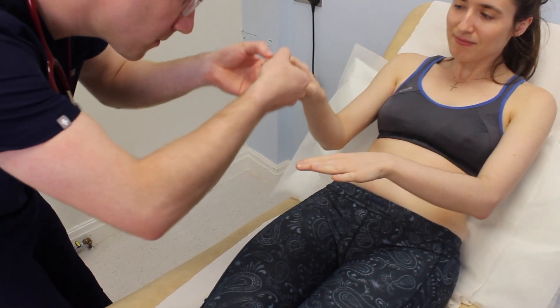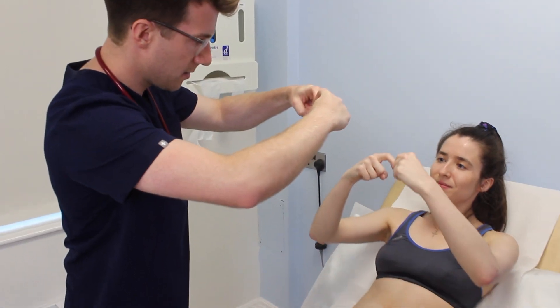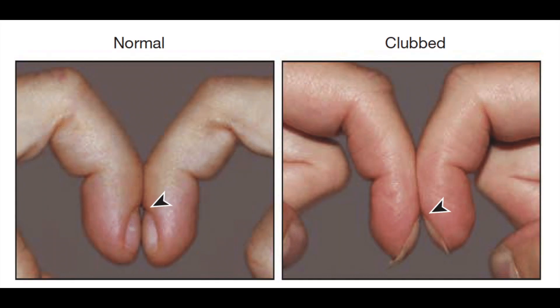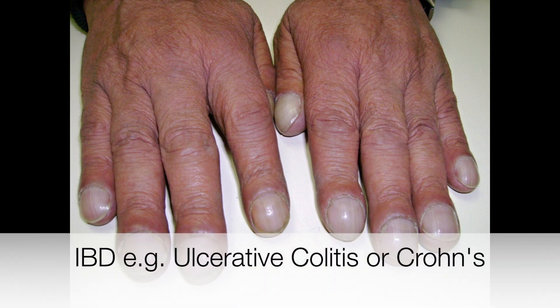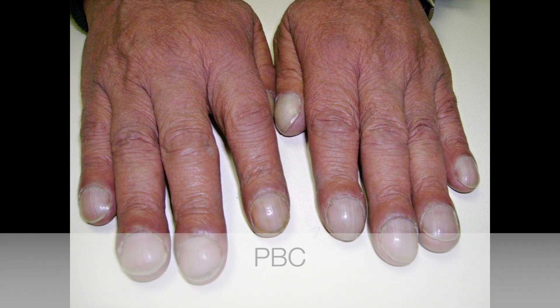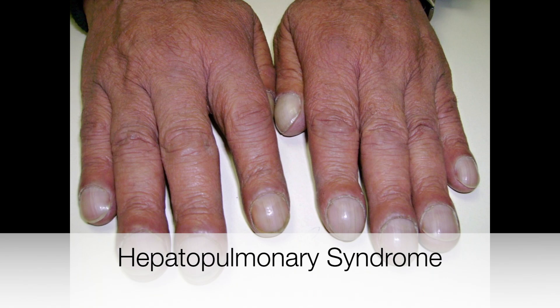Next, assess for finger clubbing. Ask the patient to place the nails of their index fingers back to back. In a healthy individual, you should be able to observe a small diamond-shaped window known as Schamroth's window. When finger clubbing develops, this window is lost. In relation to the abdominal examination, finger clubbing can be present in conditions such as ulcerative colitis, Crohn's disease, primary biliary cirrhosis, cirrhosis of the liver, and hepatopulmonary syndrome, amongst other things.